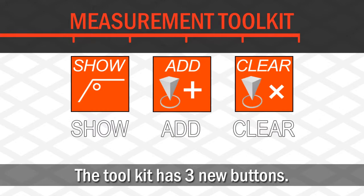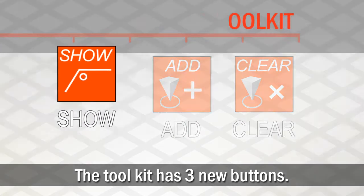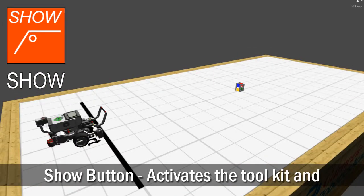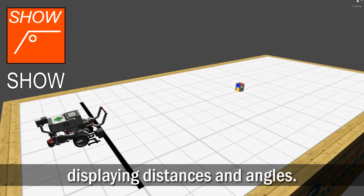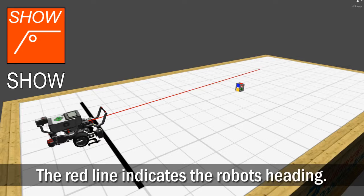The toolkit is controlled by three new buttons in the interface. The Show button activates the measurement toolkit, displaying the distance and angles from the robot to key objects within range, relative to the robot's heading, indicated by a red line.